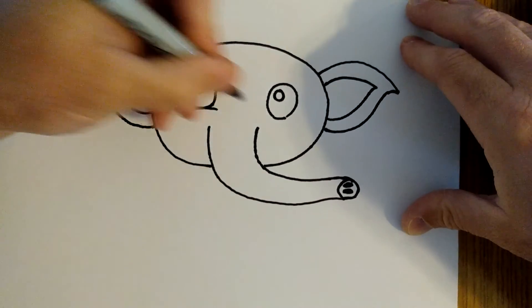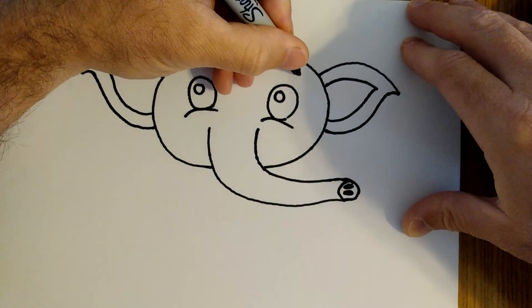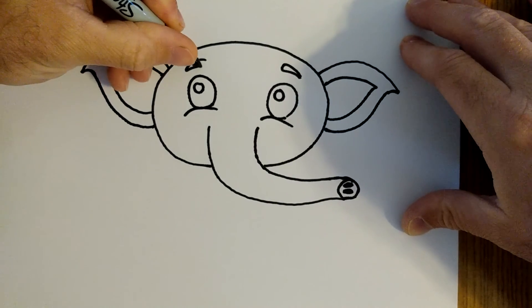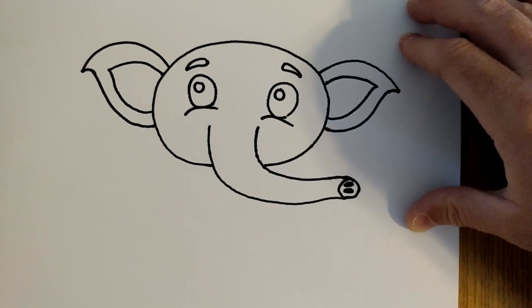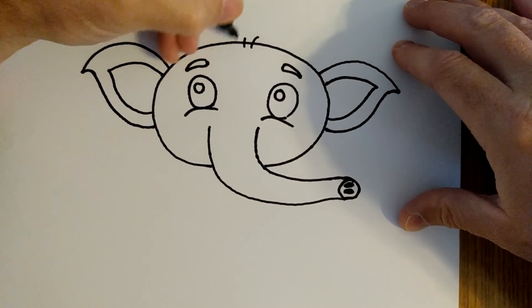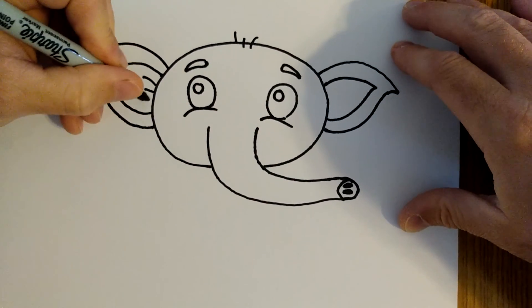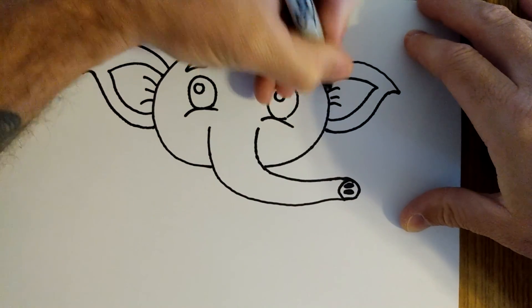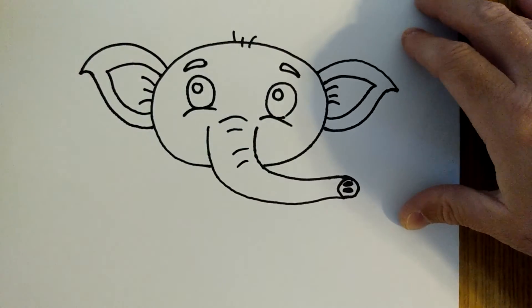Under the eyes I'm going to give two curves and I'm going to give them some little eyebrows like that. Now to add some detail, I'm going to add a couple little hairs here, some lines in the ears, and a few lines across the trunk.